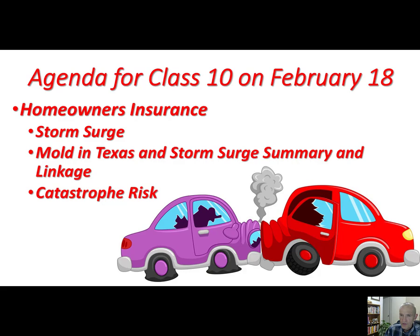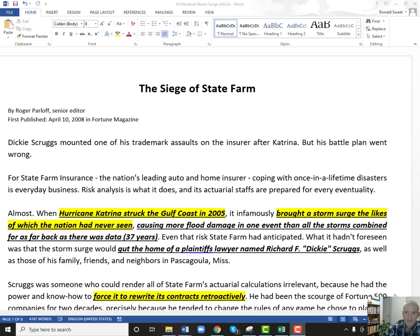So today we're up to class 10. I want to go through the storm surge article and then go through the notes. There's going to be some redundancy here because we're going to go back through the class notes, what we covered in the articles on mold and storm surge, give a good summary and then what are the linkages between the two. And then we'll start on catastrophe risk — we probably won't get too far on catastrophe risk.